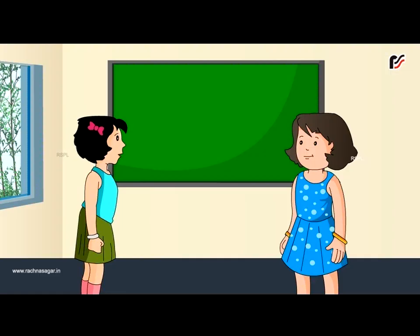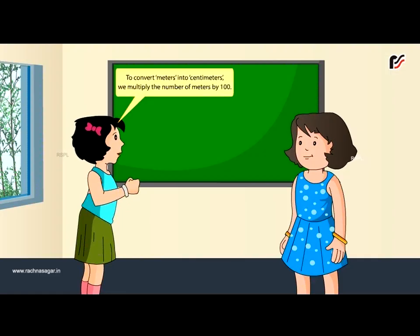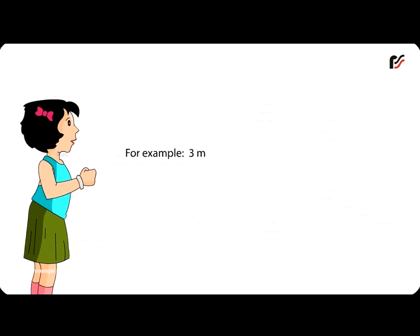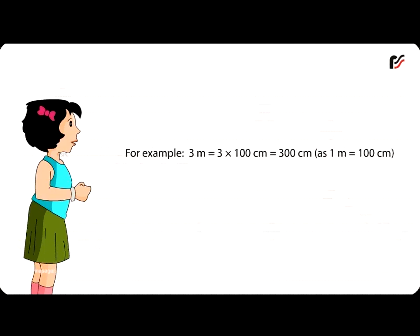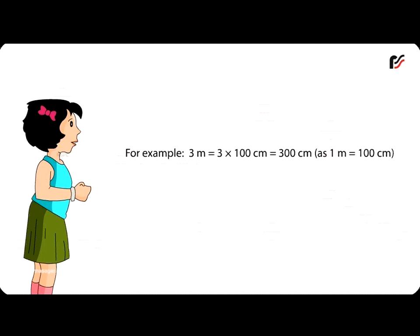Conversion. To convert meters into centimeters, we multiply the number of meters by 100. For example, 3 meters is equal to 3 × 100 cm, which is equal to 300 cm, as 1 meter is equal to 100 cm.